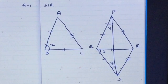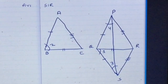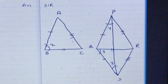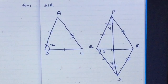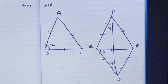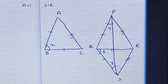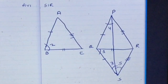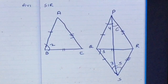Now in triangle PRS, PR was equal to AC as given in the question, and by CPCT we proved that AC is equal to RS. Therefore PR and RS are also equal. Since two sides of triangle PRS are equal, the angle opposite to PR, angle 5, will be equal to the angle opposite to RS, angle 6.